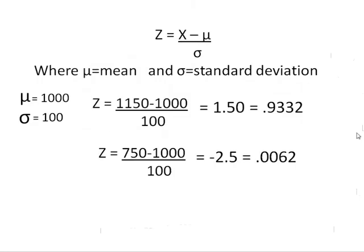Mathematically, we have two z formulas, one for each value of x. We put in 1,150 and get a z value of 1.50. Looking that up on the z chart gives us 0.9332. Then we put 750 into the z formula, get a z value of negative 2.5, look that up on the z chart, and get 0.0062.